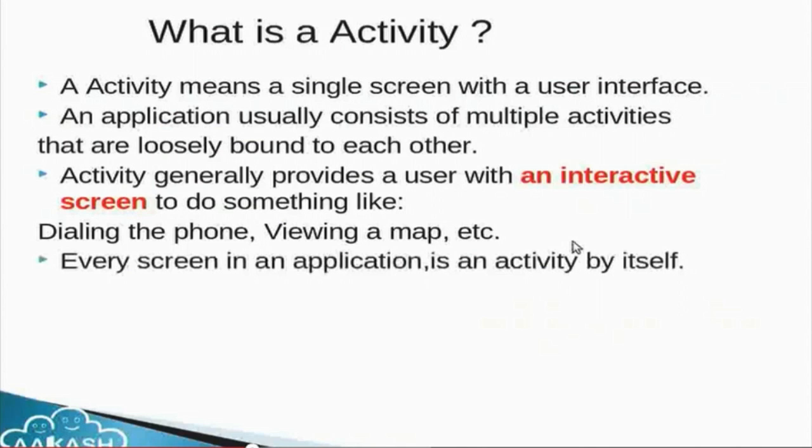Let us take an example of an email application. An email application might have one activity that shows a list of new emails, and another activity to read an email. Although the activities work together to form the user interface, each one is independent of the others — all activities are not directly connected to each other. For example, a camera application can start an activity in the email application to compose a new mail.